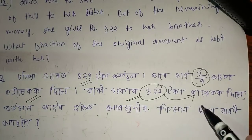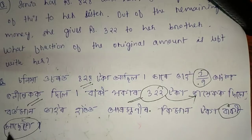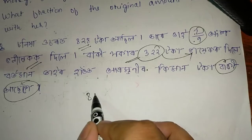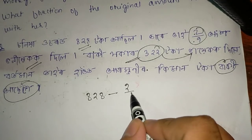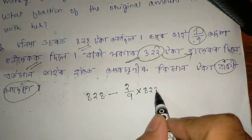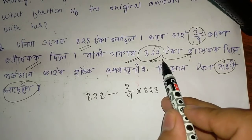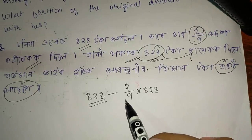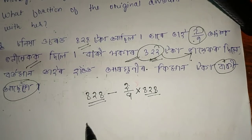After giving 2/9 to sister, she is left with a certain amount. From the remaining, she gives 3/22 to her brother. We need to find what fraction she has left. We multiply 828 by 2/9 — that is, 828 × 2/9. Then subtract from 828 to find the remaining amount.